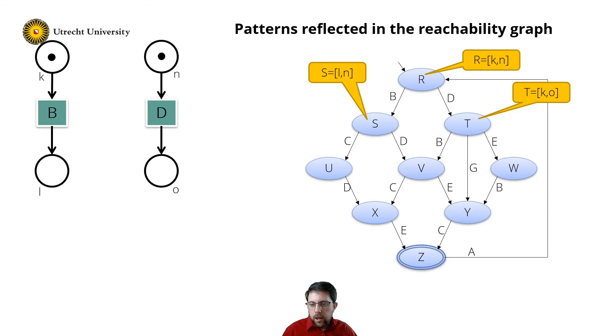Hence transition C has to be in sequence with transition B and concurrent with transition D. So that means that I can create a net like this. That also means that I can fill in my label transition system a bit more. So state U is the marking MN, state X is the marking MO, and state T is still KO.